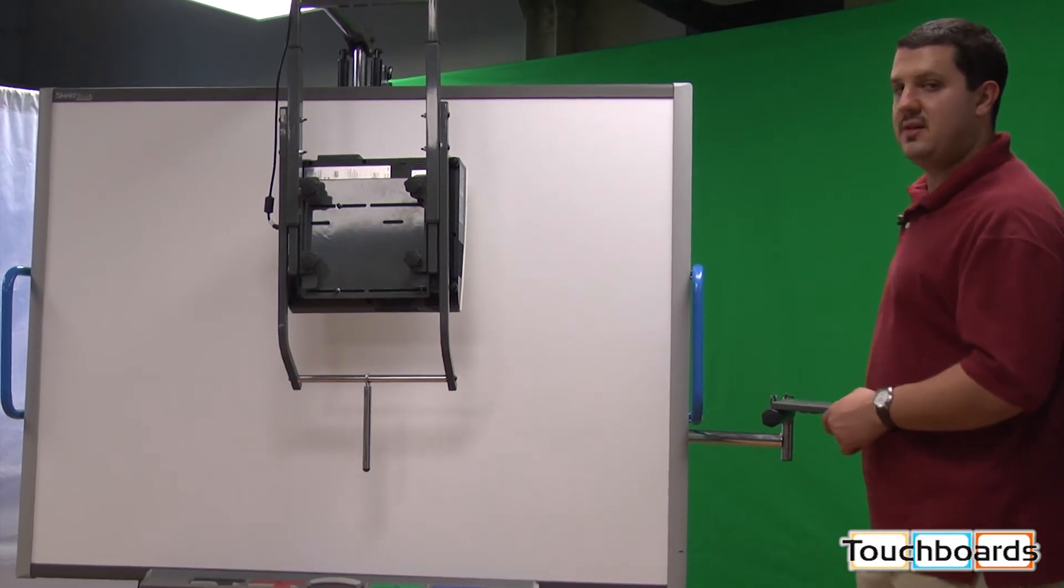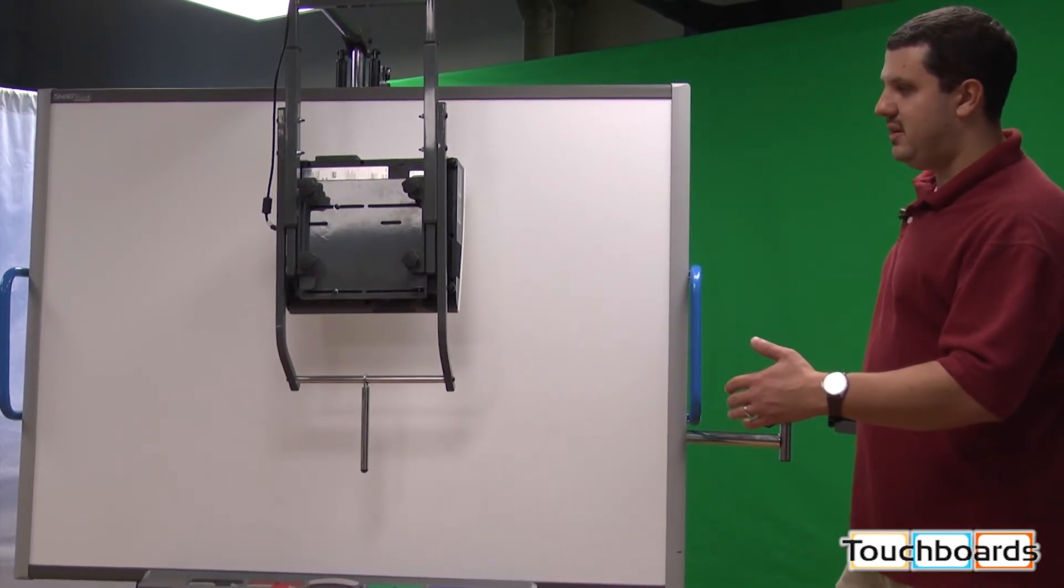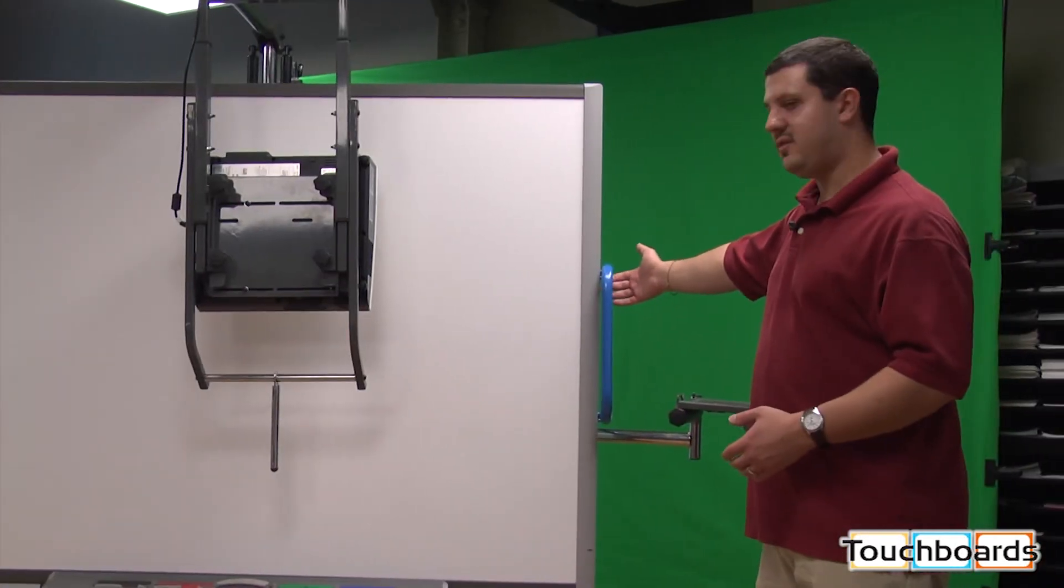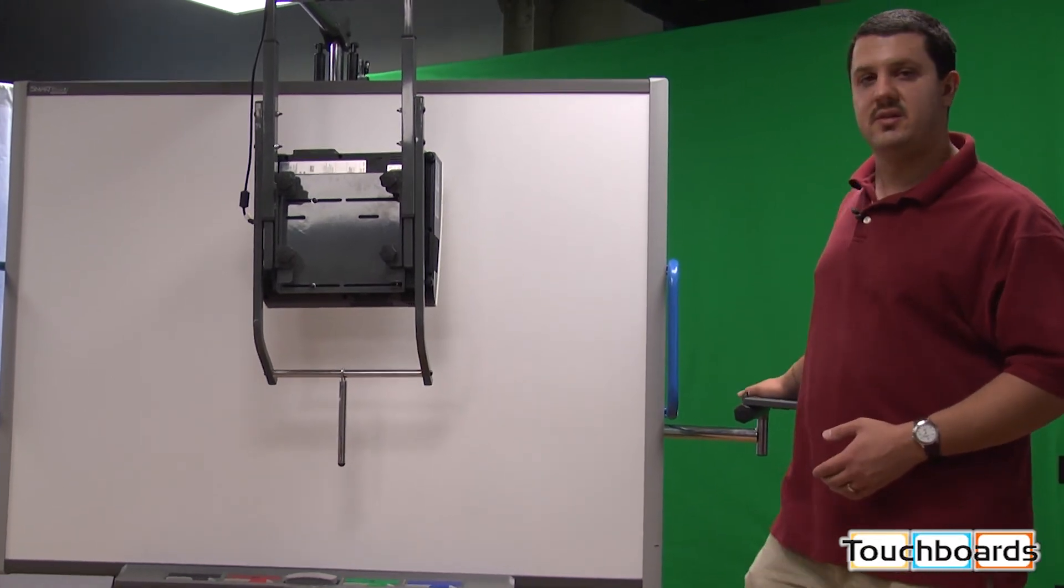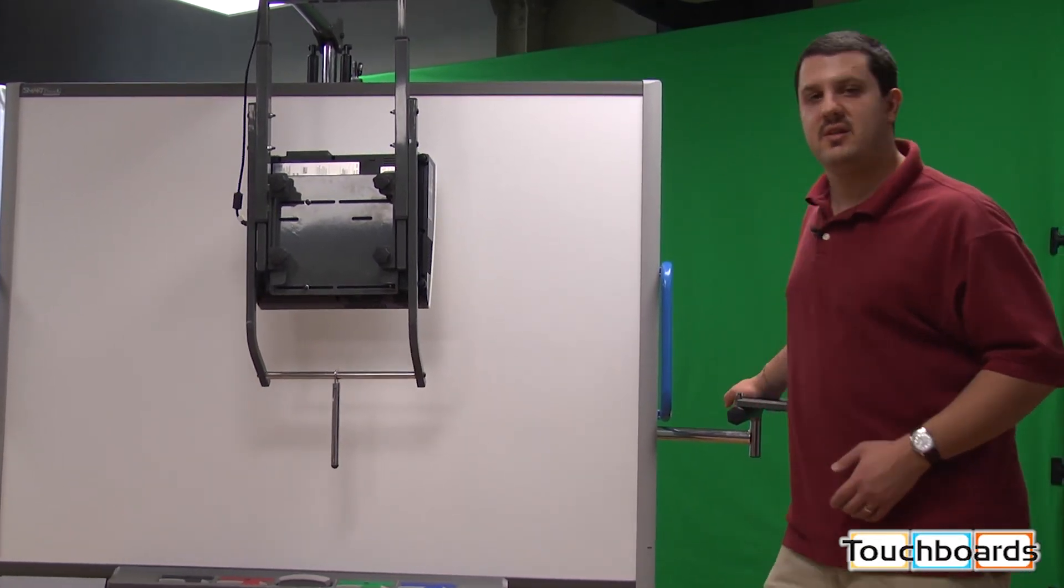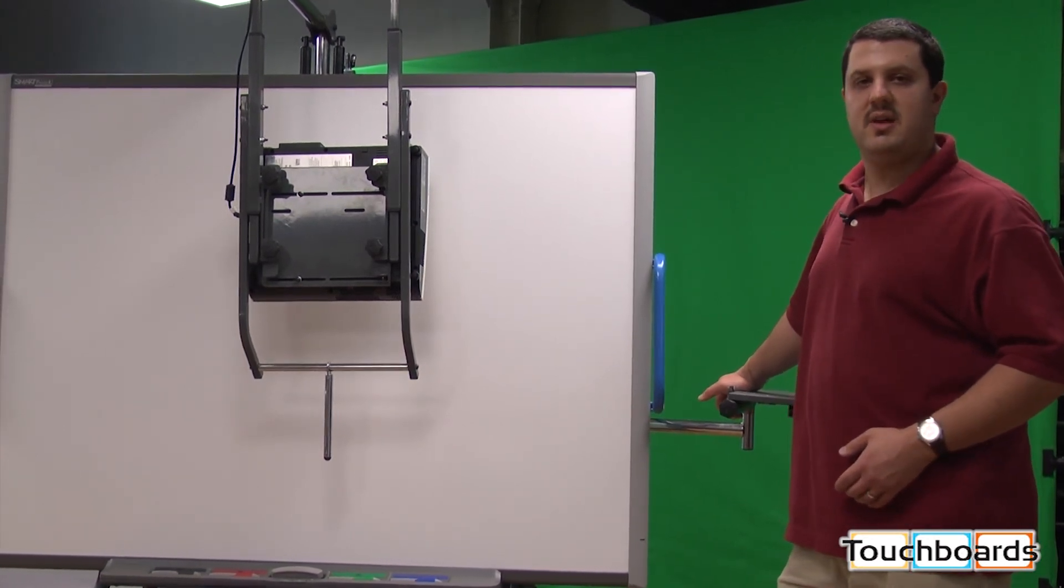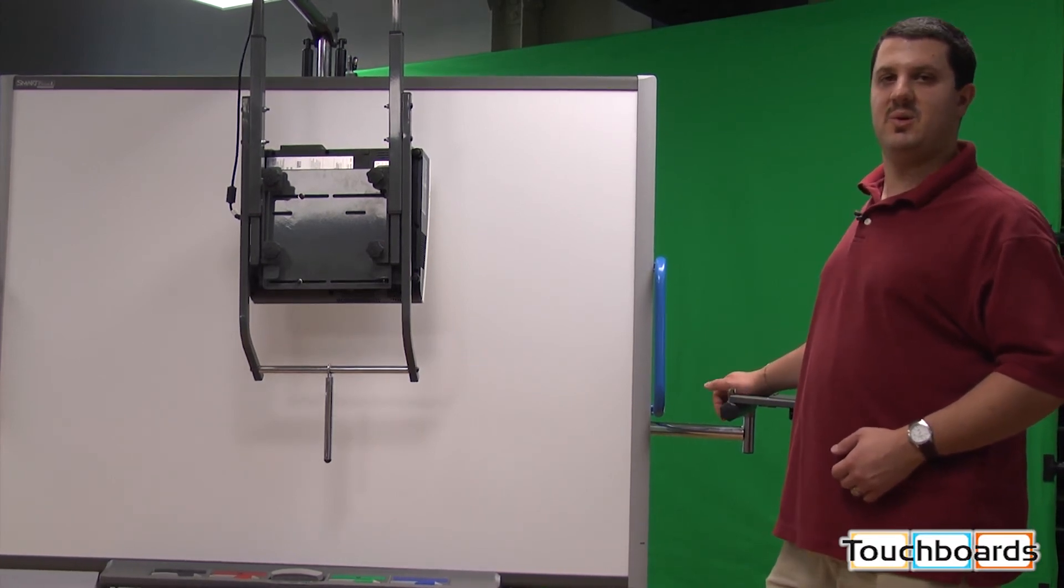All right, again, this is the iRover stand for the smart board. They have it, I believe, up to the SB685 you can put on here. These handles are adjustable. They do move out to accommodate the wider board. Any questions, feel free to give us a call at 866-942-6273, or send us an email at sales at touchboards.com. I'd be happy to answer any questions you have, as well as send you out a price quote.